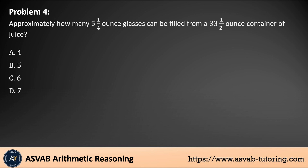Problem number 4: approximately how many 5 and 1/4 ounce glasses can we fill from a 33 and 1/2 ounce container of juice? There is a keyword here — 'approximately' — that means you kind of have to estimate. Basically, you are pouring juice from a container into small glasses, which means you are dividing. So let's divide 33 and 1/2 by 5 and 1/4.